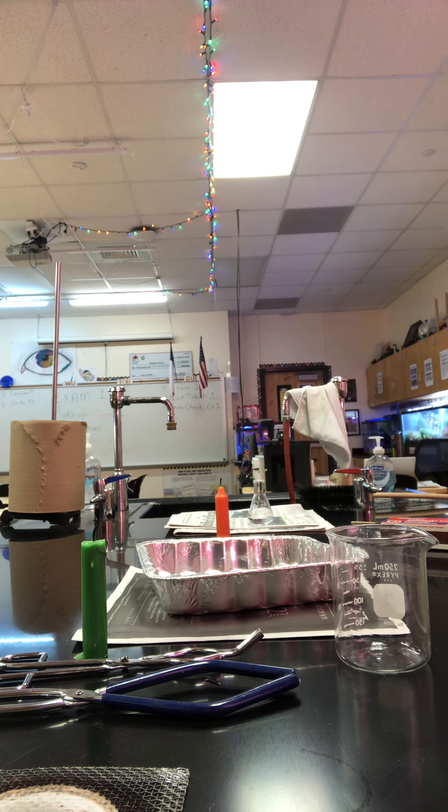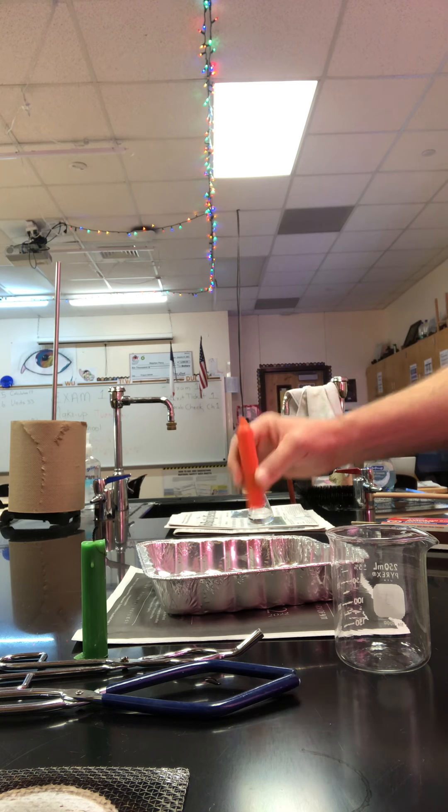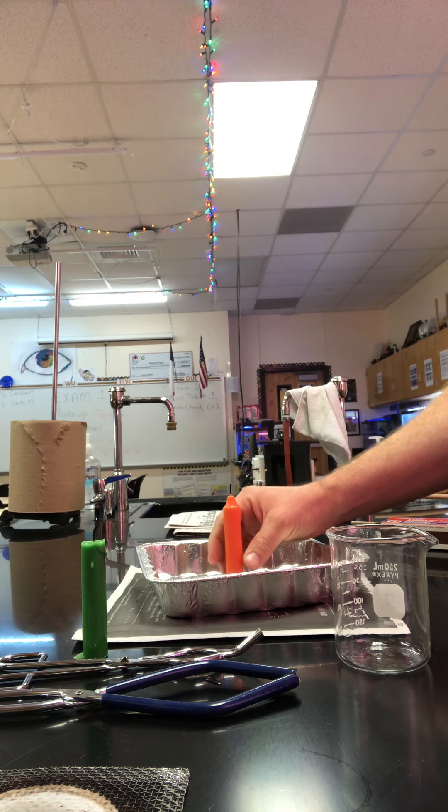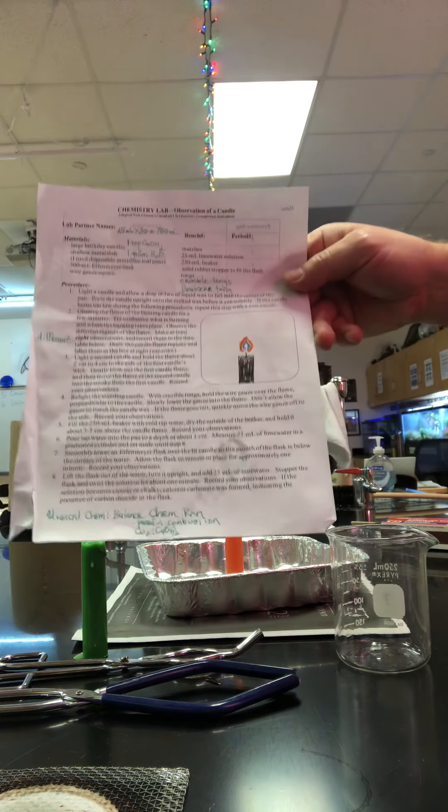The first thing we're gonna do is light a candle, use the wax of the burning candle to kind of glue the candle down in place. The second step says to observe the flames. So you need to watch the flame, draw your own beautiful picture like I did here, and on number two on the back you're gonna put eight observations of your flame.